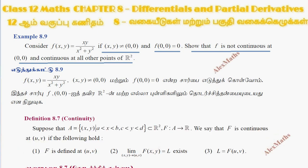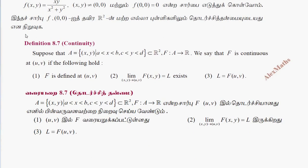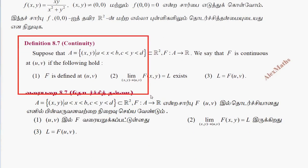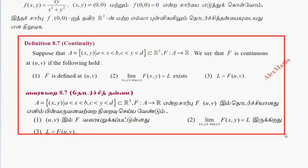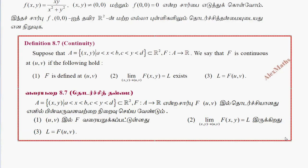To prove continuity, we have verified the definition. Suppose the function is defined at a point — we check three conditions: the function is defined, the limit value exists, and the limit value equals the function value at that point.